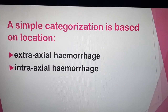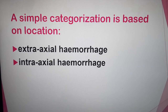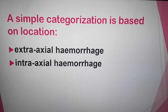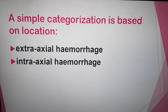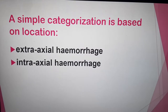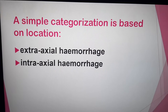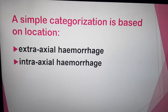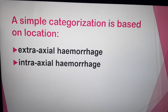The intracranial hemorrhage is divided according to location within the intracranial cavity into extraaxial and intraaxial. Extraaxial hemorrhage means the hemorrhage is outside the brain parenchyma — located in the space between the cranial bone and the brain. Intraaxial means the hemorrhage is inside the brain itself.